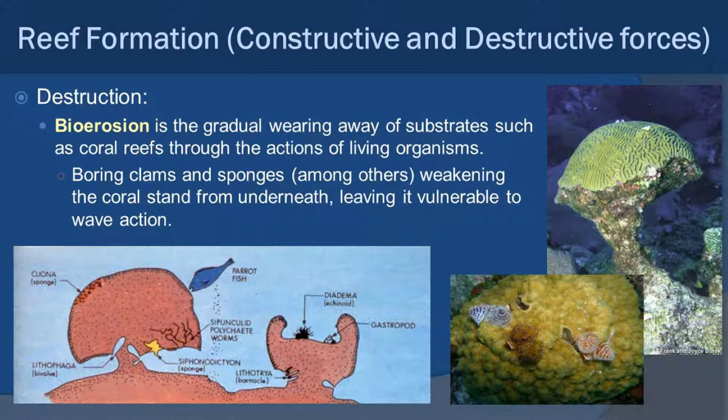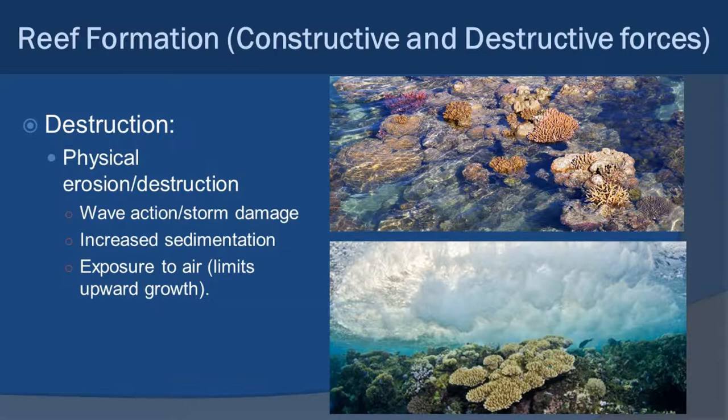In that picture on the bottom middle, you actually see these little plumes coming out of the coral — those are what we call Christmas tree worms, and they are boring into the coral itself as well. You also have various different types of fish that will nibble on things, and urchins which will scrape things off of rocks. So there's a lot of different organisms that are constantly eating away at the coral.